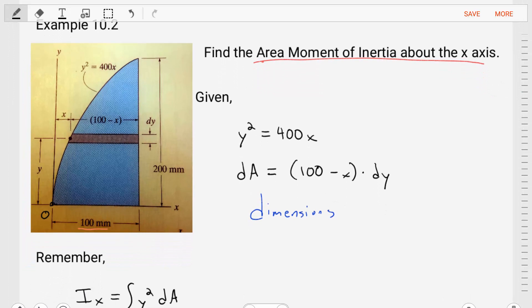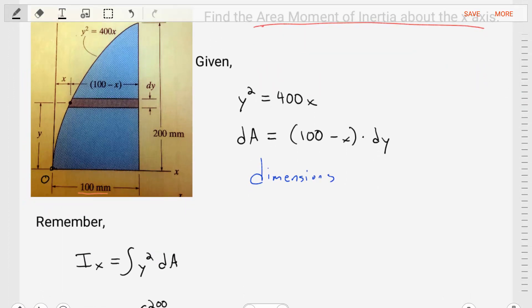Let's remember that when we want to find the area moment of inertia, it is defined as the integral of y squared times dA, and that means the area moment of inertia with respect to the x-axis.